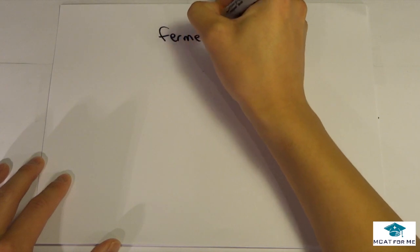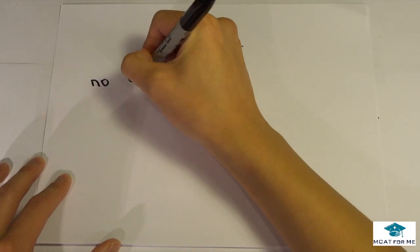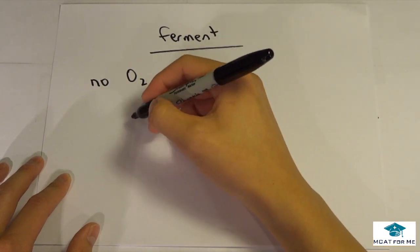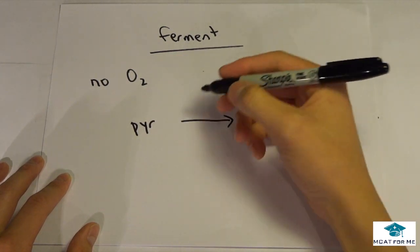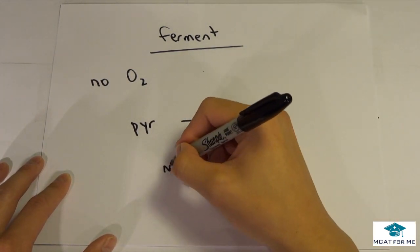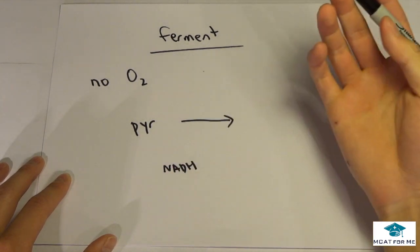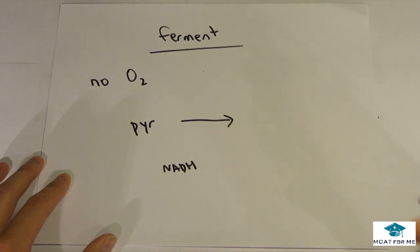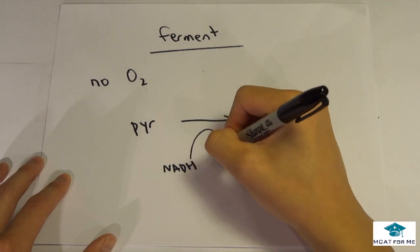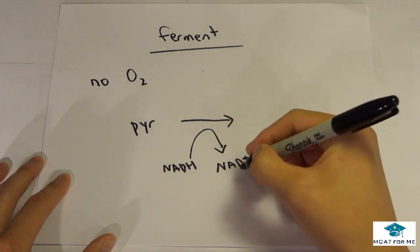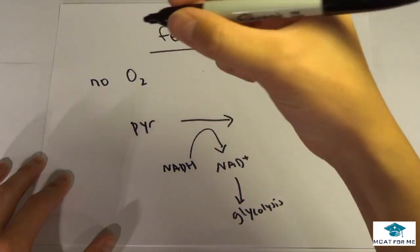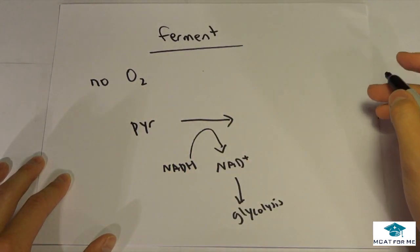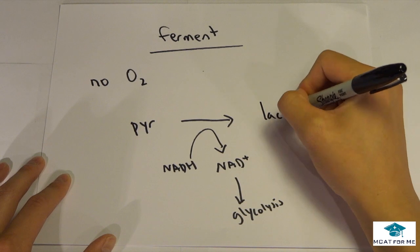Fermentation is when we have no oxygen. We have this end product of pyruvate. During glycolysis we produce all this NADH. NADH helped us fuel glycolysis because NAD was an electron acceptor and formed this NADH. But we need to reform that NAD because that will help to go into glycolysis. So the main thing for fermentation is that we need to reform NAD.